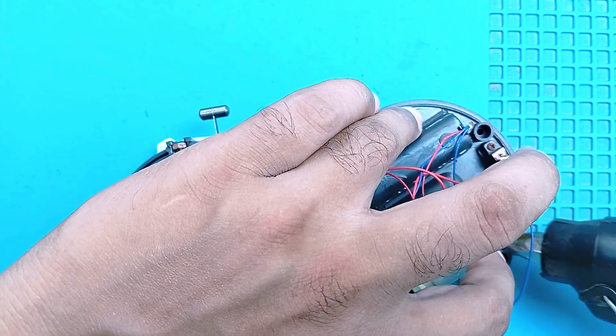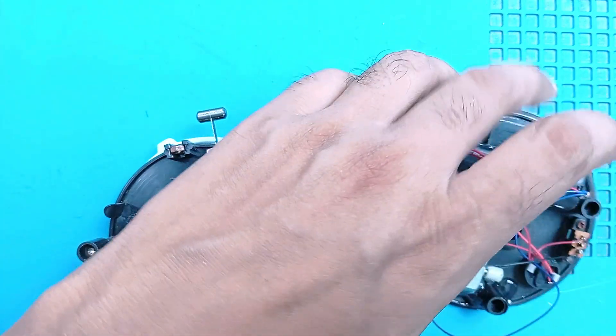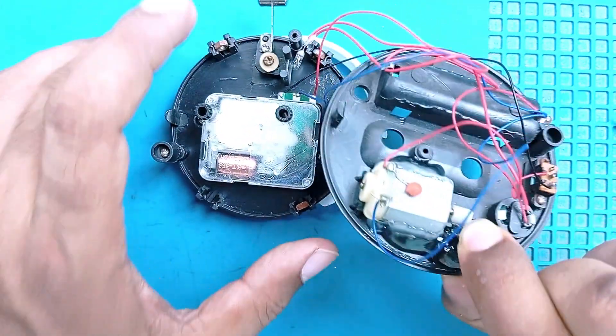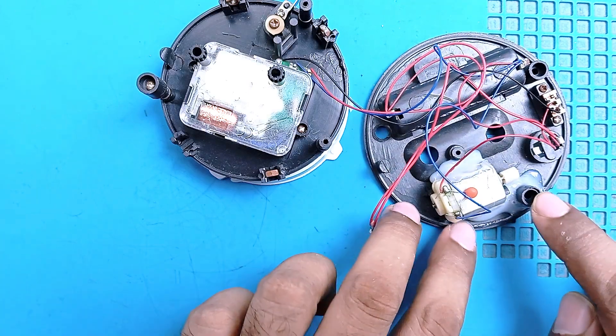Hot glue cannot hold it very well, but hot glue is better than no glue. I have to hold it like this until the hot glue reaches normal temperature. Okay, I glued this broken piece and the motor in the right place.